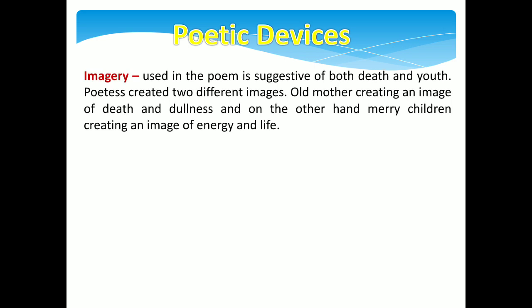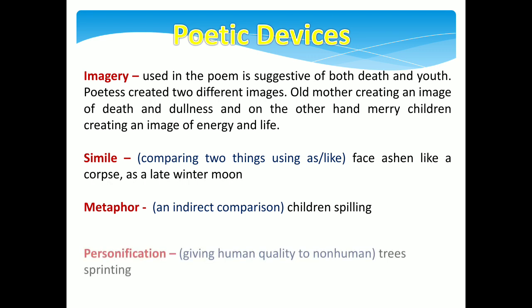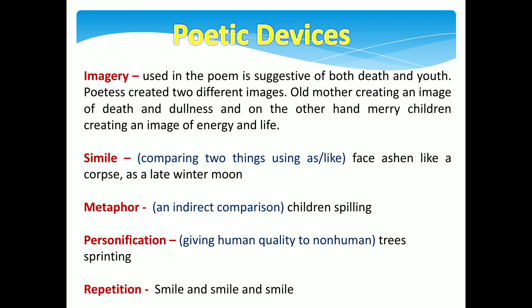Students, let's talk about the poetic devices used in the poem. First, imagery — used in the poem is suggestive of both death and youth. The poetess creates two different images: the old mother creating an image of death and dullness, and on the other hand, the merry children creating an image of energy and life. Simile — comparing two things using 'as' or 'like', for example, 'face ashen like a corpse' and 'pale as a late winter's moon.' Metaphor — an indirect comparison, for example, 'children spilling.' Personification — giving a human quality to something non-human, here 'trees sprinting.' And repetition — 'smile, and smile, and smile.'